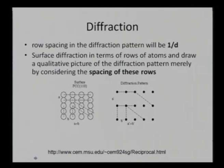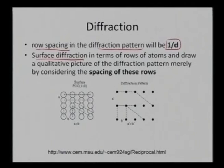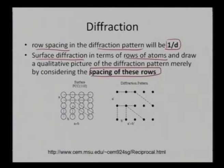The Ewald sphere construction plus the diffraction jointly determine whether a particular spot will be present or absent. In diffraction, once diffraction occurs the row spacing in the diffraction pattern becomes 1/d — interplanar spacing d becomes 1/d in reciprocal spacing. I can see this in surface diffraction in terms of rows of atoms and draw a qualitative picture of the diffraction pattern just by considering what kinds of planes are present. By considering the space between two rows I can construct my reciprocal lattice and bring out the diffraction pattern.